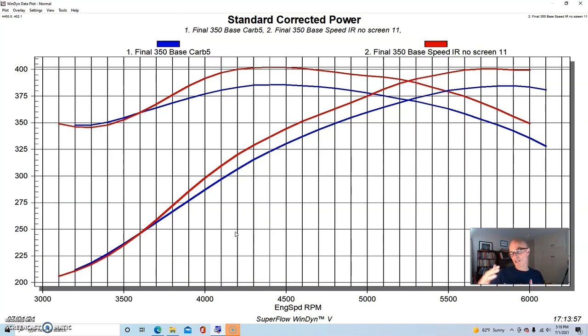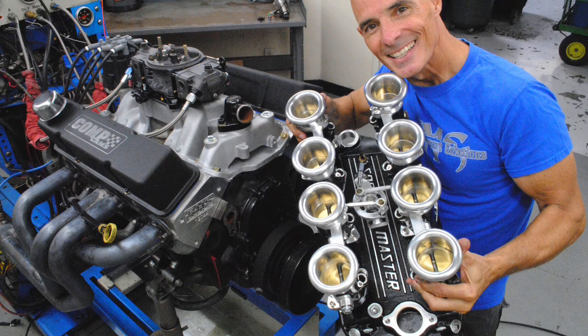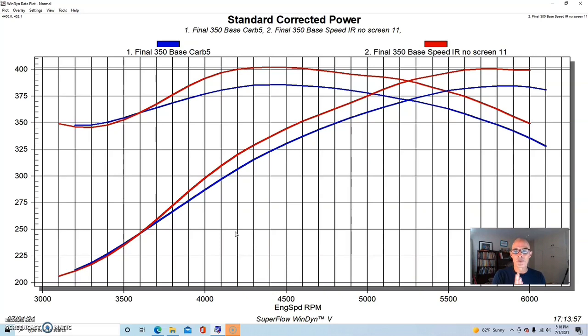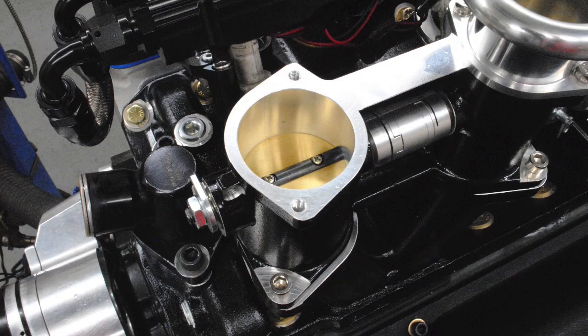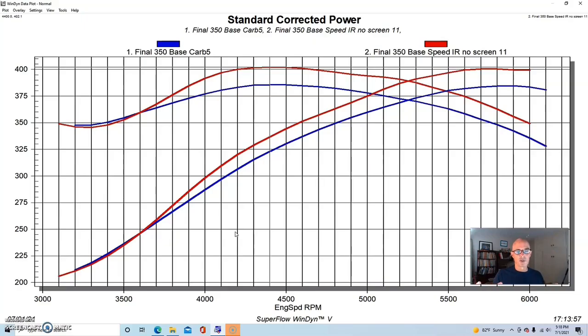One of the problems with these setups, and we'll see in this test we actually ran the screens that came with this setup. Now the screens are designed to keep big things out of there. Filters on these things would be even better, but you run into two problems when you're trying to get some sort of filtration with these stack injections. One is you can run a big base kind of like they do on trophy trucks where they house these stacks inside a big common plenum or a big filter box.